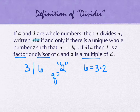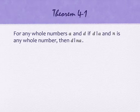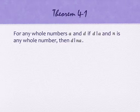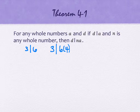We have two theorems. Theorem 4.1 says: for any whole numbers A and D, if D divides A and N is any whole number, then D divides A times N. So, we know three divides six — that means three will also divide six times four, six times three, six times seven. Anything we multiply it by, it's still going to be divisible by three.